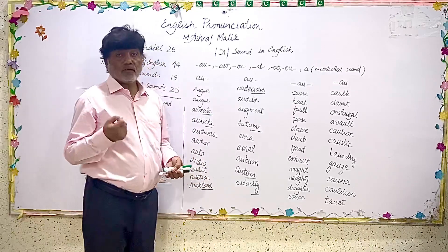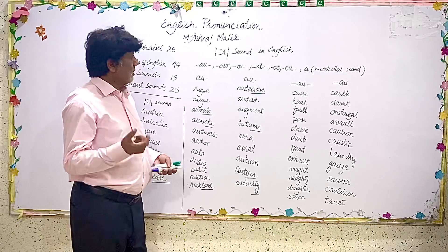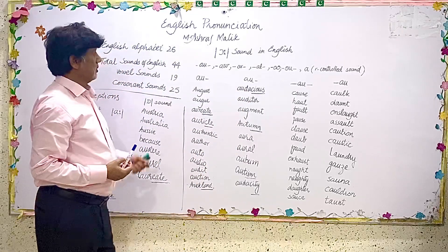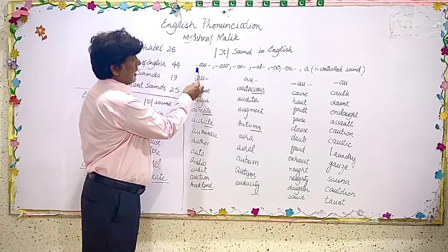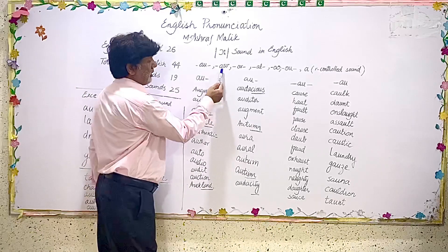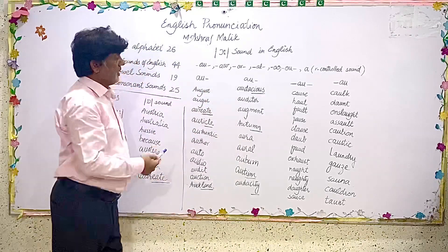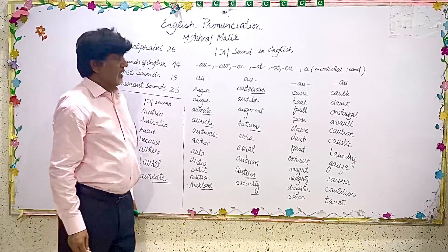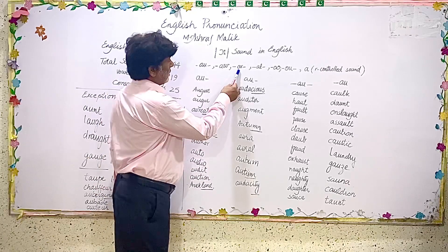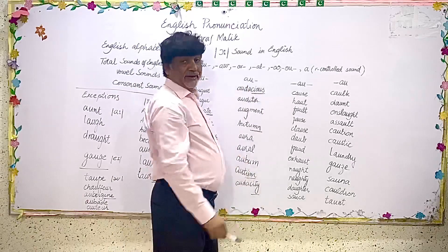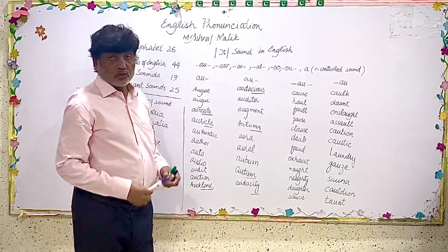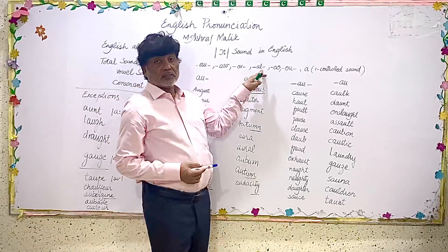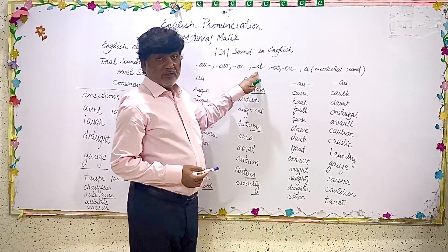This O sound we can have from many different ways. When A and U come together, they give us the O sound. When A and W come together, most of the times they also give us the sound O. When O and R make a combination, this combination also gives us the sound O. When A-L-L come together, they mostly also give us the sound O.